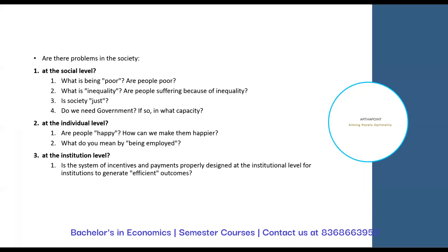What is fair allocation of resources? How does the government decide what to produce, how much to produce, how to produce? How does the government decide how to allocate resources? How do you know that an individual is employed? Just because an individual is working doesn't mean he is employed. How do you know that an outcome is an efficient outcome? How do you know what an institution does what it does, and why does what it does?